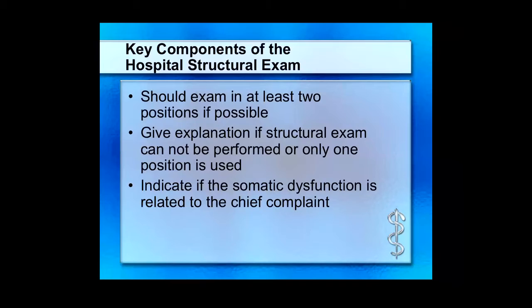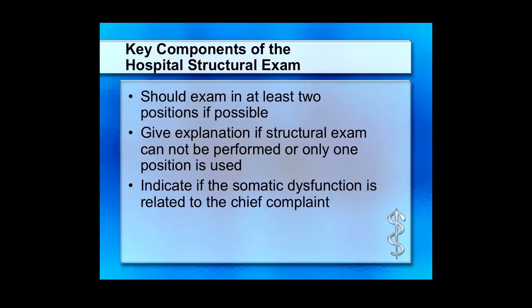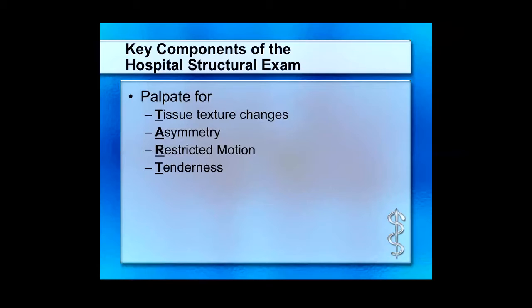You need to do this examination in at least two positions if at all possible. When documenting, you need to explain why or why not. When you document in your H&P — translating into the ability to perform OMT and for your attending to bill — you should be documenting somatic dysfunction wherever it is helpful. It's especially useful if you discuss its relationship to the primary disease process. Your TART findings are: tissue texture changes, asymmetry, restricted motion, and tenderness. Asymmetry and restricted motion are things you can pick up on visual inspection and then better define on palpation.